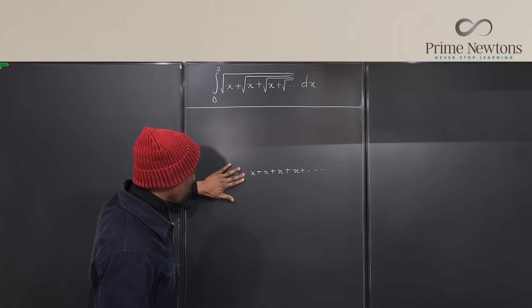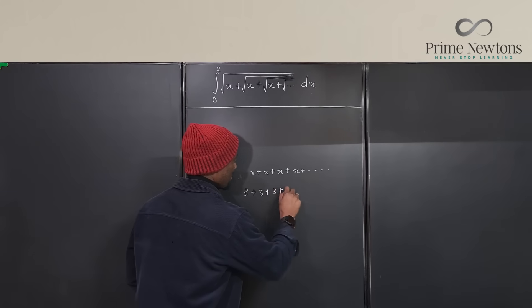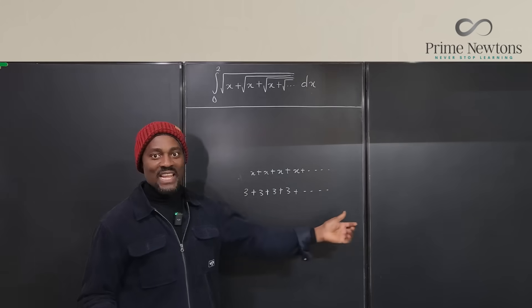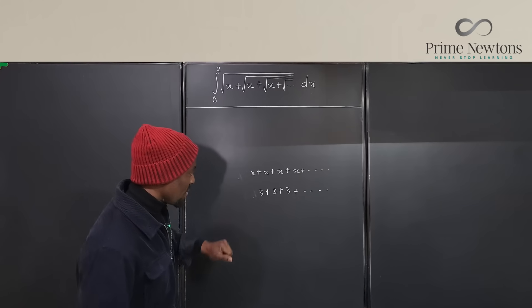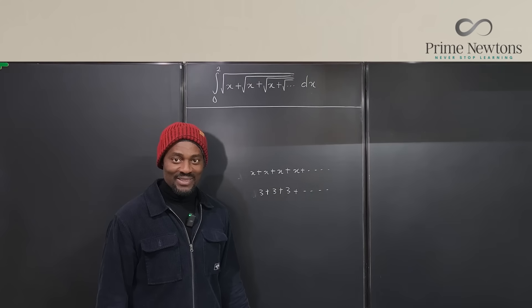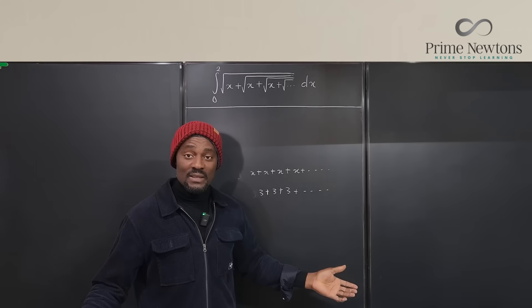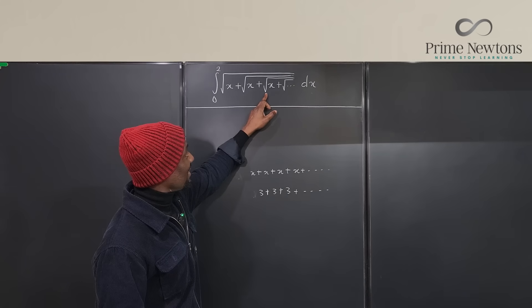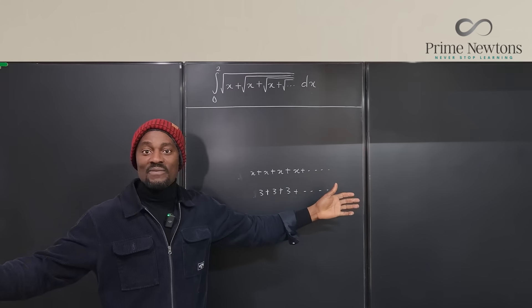Notice that if I remove one of the x's — say three plus three plus three plus three going on to infinity — the answer is infinity, because you're adding an infinite number of threes. If I remove one term, the answer is still infinity because there are still an infinite number of terms. It doesn't matter where you start; it still goes on to infinity.